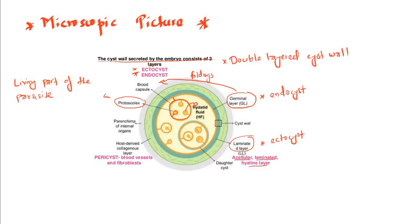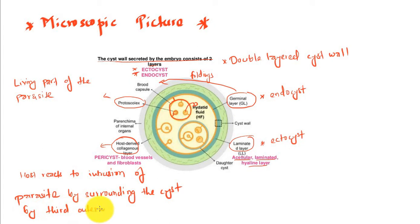This is the head of the organism, which secretes the hydatid fluid. There is host reaction to the intrusion of the parasite by surrounding the cyst with a third outermost adventitial fibrous tissue layer called pericyst. Daughter cysts are separated from the brood capsules and are independently floating inside the hydatid fluid. We have ectocyst, endocyst giving rise to brood capsules, and the outer host-derived collagenous layer.